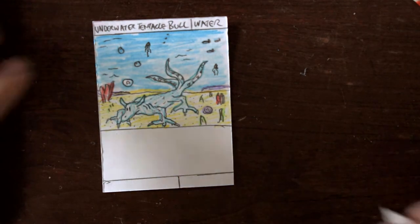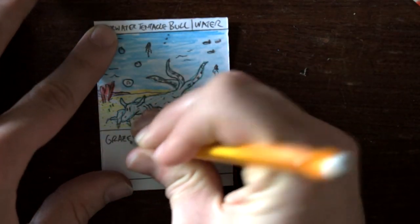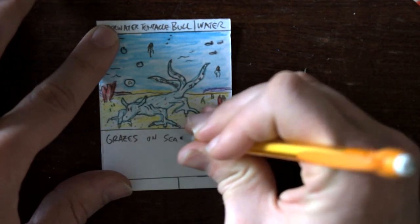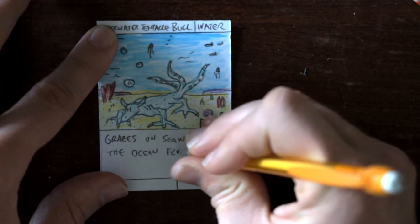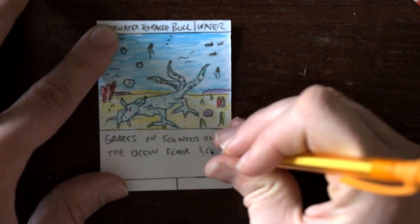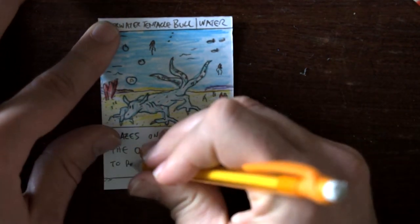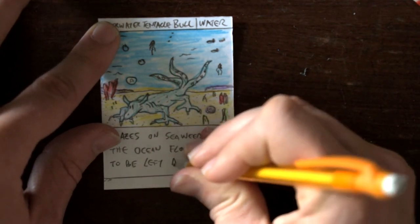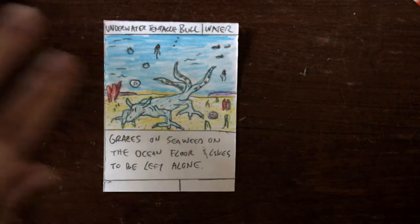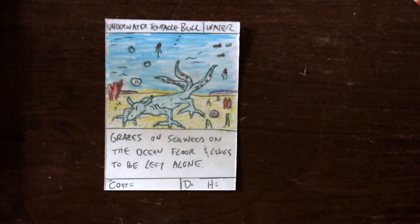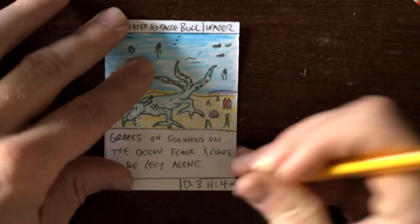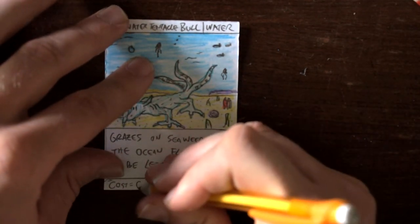Type: Water. Now, what is his description? Grazes on seaweed on the ocean floor and likes to be left alone. Why not? Cost, damage, and health. What is his damage? I'm thinking, yep. His damage is three and his health is four. Four plus three is seven. Seven plus one is six. So his cost is six.